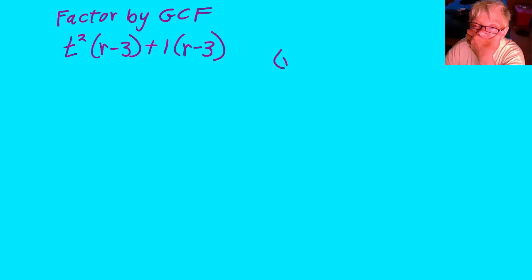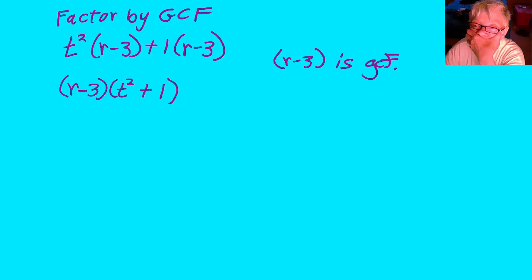r minus 3 occurs in both terms, so r minus 3 is the GCF. We pull the GCF out to the front: r minus 3 in parentheses, and then we write the leftovers in parentheses: t squared plus 1. GCF, leftovers.